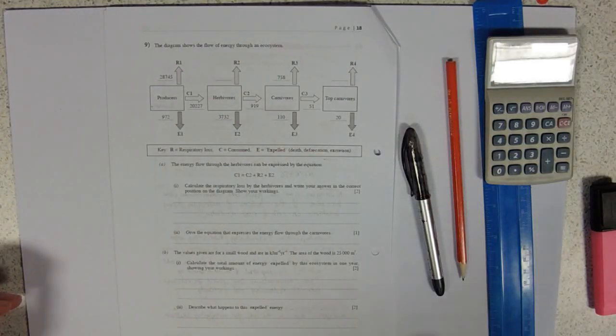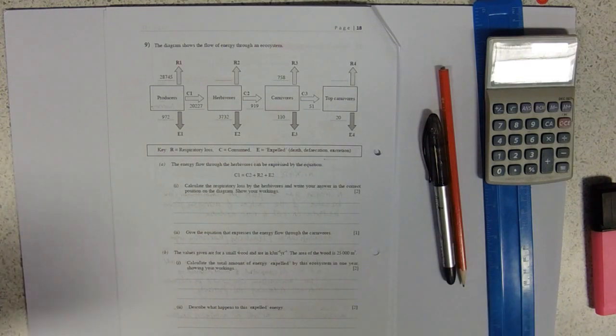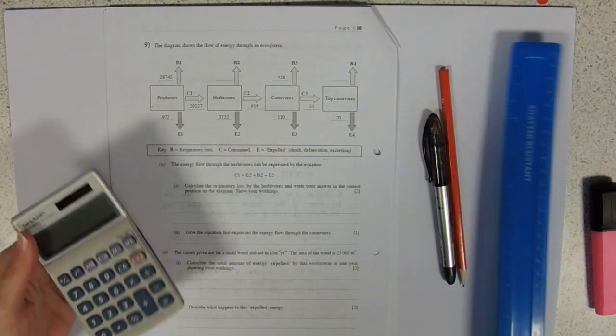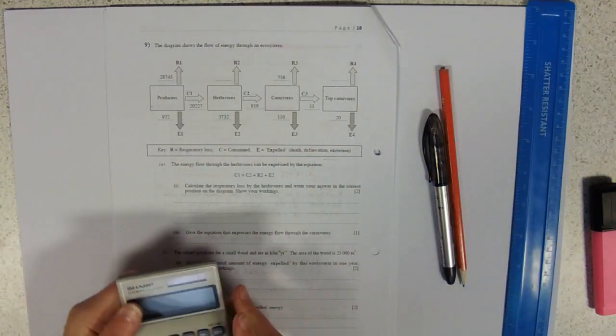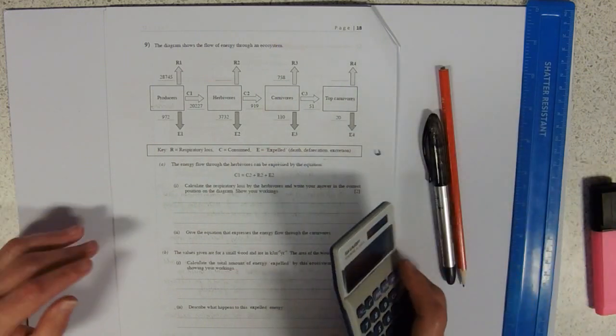Okay, so it's homework time again. This is component one task booklet, question nine. We're on the ecology topic. What do we need? Ruler, calculator, pencil and pen. Definitely going to need a calculator for ecology because they're always asking these percentages and what's going where.